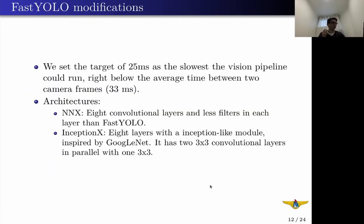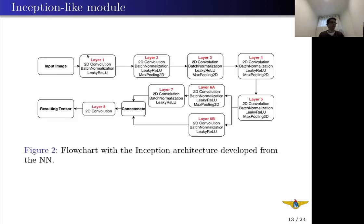About our YOLO implementation, we set the maximum execution time of our vision pipeline at 25 milliseconds, which is just below the average time between two image frames. We created two architectures to compare. NNX has 8 layers and fewer filters in each layer than FastYOLO. InceptionX adds an Inception-like module to NNX; this module is inspired by GoogLeNet and improves detection with a low increase in computational cost. We varied the number of filters in each layer to compare performance between architectures. InceptionX is shown in this flowchart, with two convolutional layers in parallel with one 3x3 convolutional layer that starts at a bifurcation after layer 5.